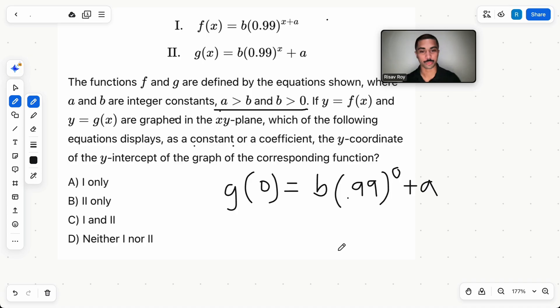Now this g function is where it gets tricky. So g(0), which is the y-intercept of g, this just turns into one because anything to the power zero is one. So b times one is b. So you end up with b plus a, which is a constant because two constants added up is another constant. However, this is not a constant or coefficient that is displayed in the original equation. B plus a is not like, you can't find it as a group or something in the original equation of g. So that's why it's wrong.